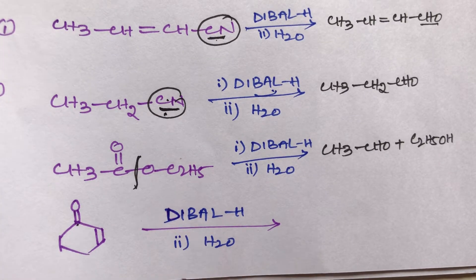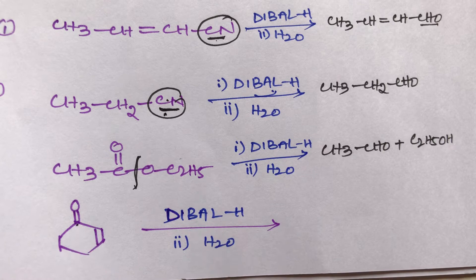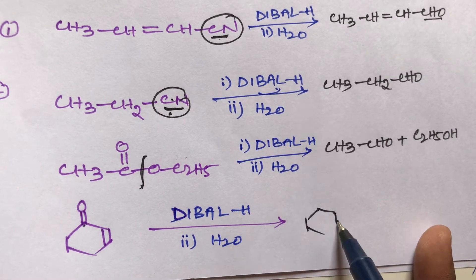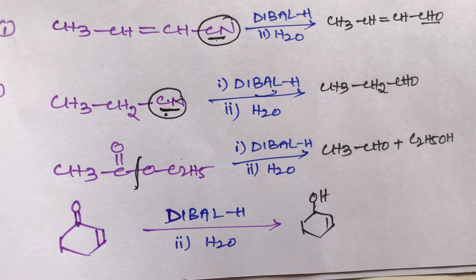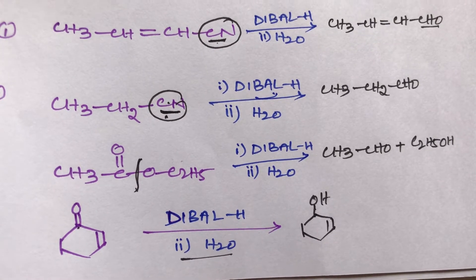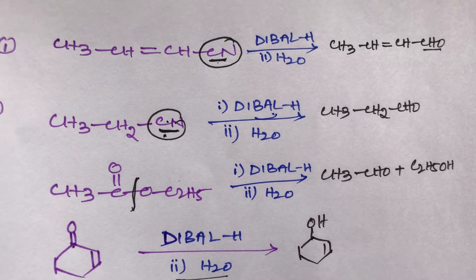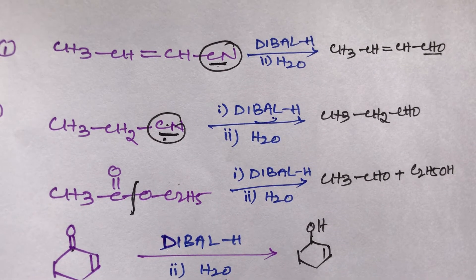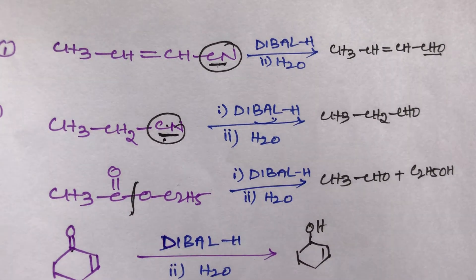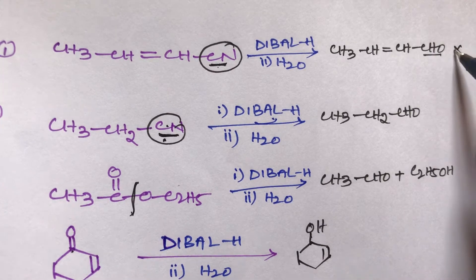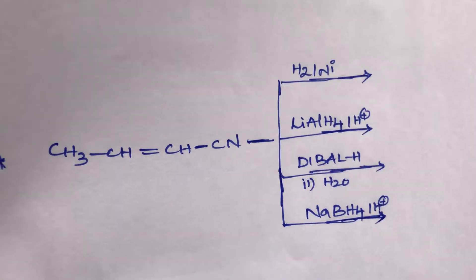Fourth example: when DIBAL reacts with a compound containing a keto group, aldehyde formation is not possible. The keto group is converted into only an alcohol. So DIBAL (diisobutylaluminum hydride) can reduce cyanogroups, acid groups, and acid chlorides — this is the simple trick.